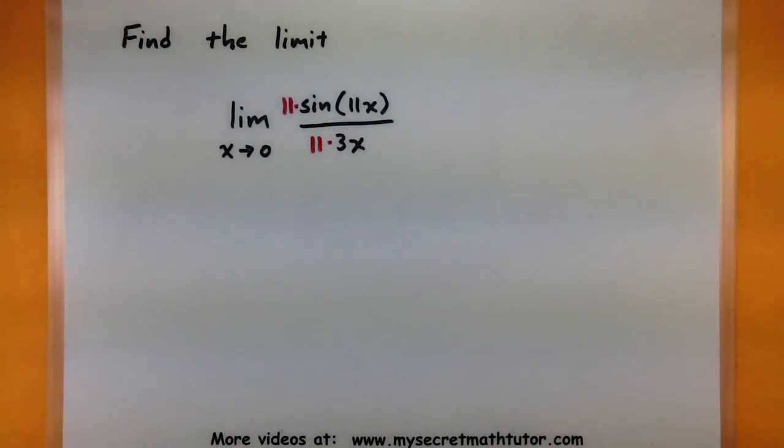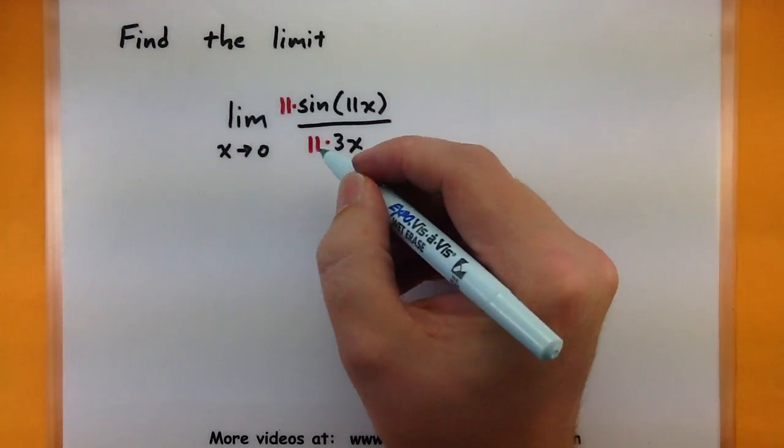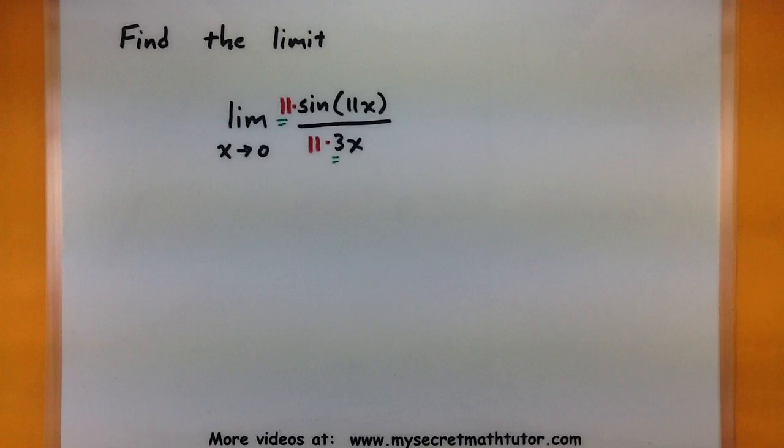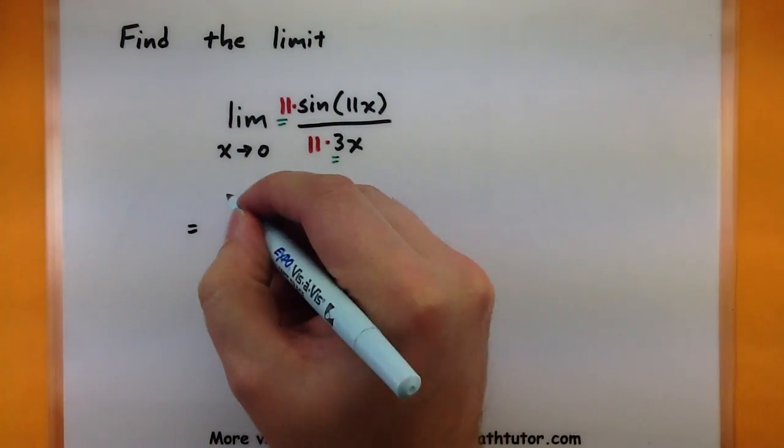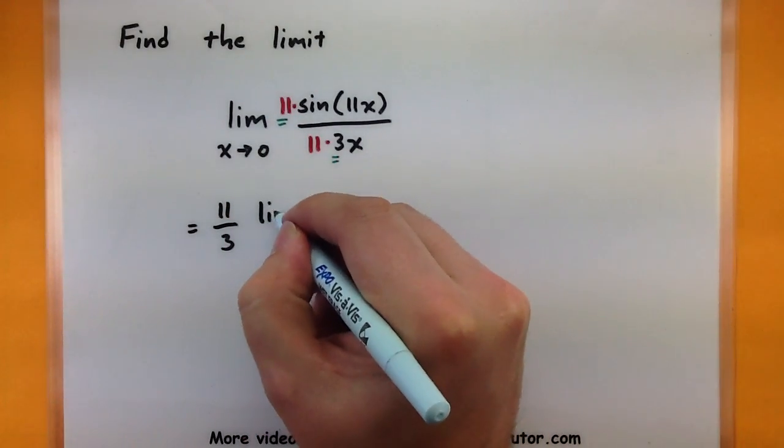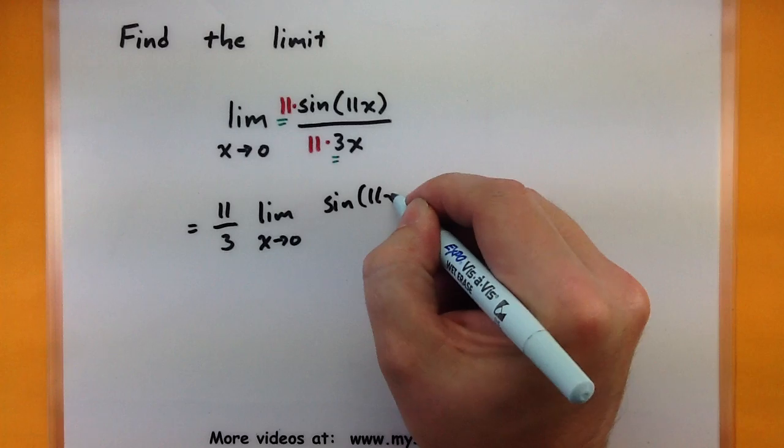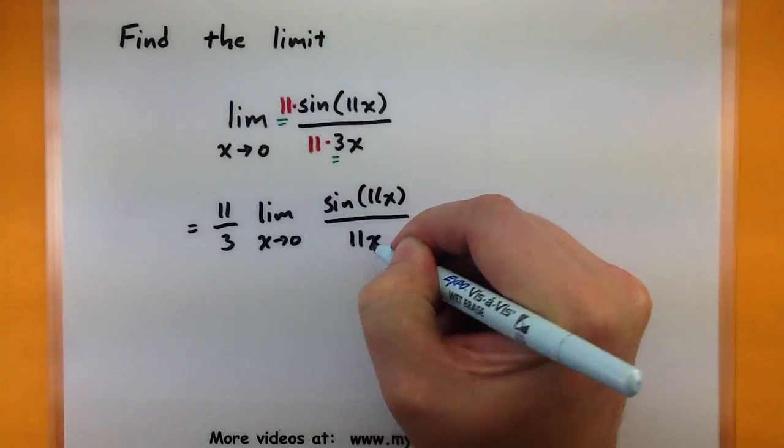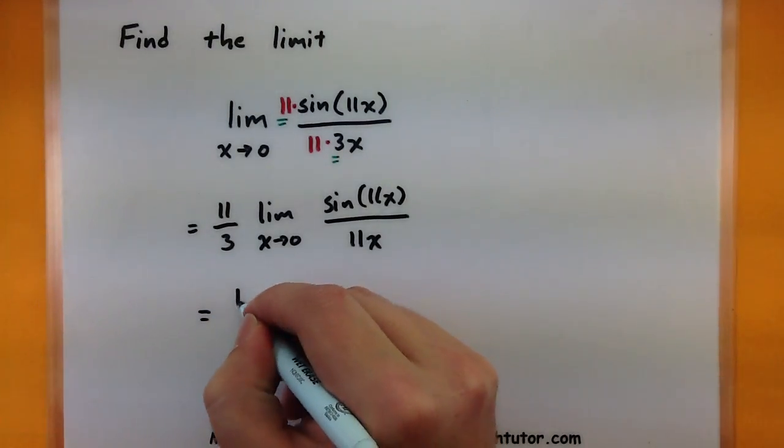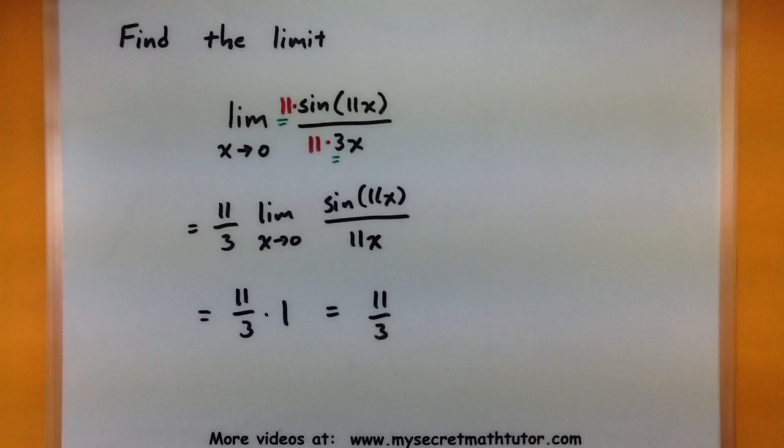Now in this system, we end up with a couple of numbers that we simply do not need anymore. So I have the 11x in the top, I want the 11x in the bottom, but we'll go ahead and move out the 3 and we'll also move out that 11. So this is equal to 11 thirds. I'm moving out that 11, moving out that 3, limit as x approaches 0 of sine of 11x all over 11x, because this 11 is still on the bottom. Now it matches what I need, so this is 11 thirds times 1, and I can see that the value of the entire limit is simply 11 thirds.